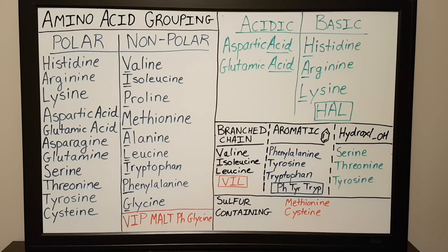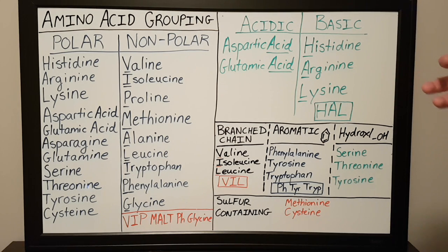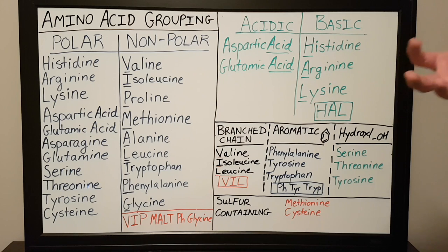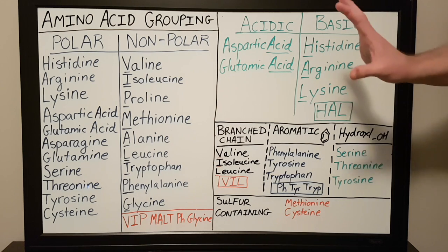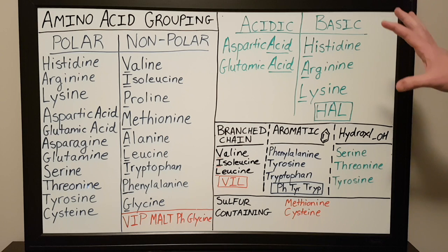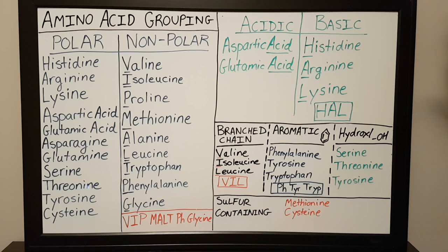In this video we'll be talking about amino acid grouping and classification. Amino acids are typically classified according to some of their chemical properties, which all depend on their side chain or R group. Today I'll give you a brief overview of amino acid grouping and the different classifications and groups that scientists typically put amino acids in.